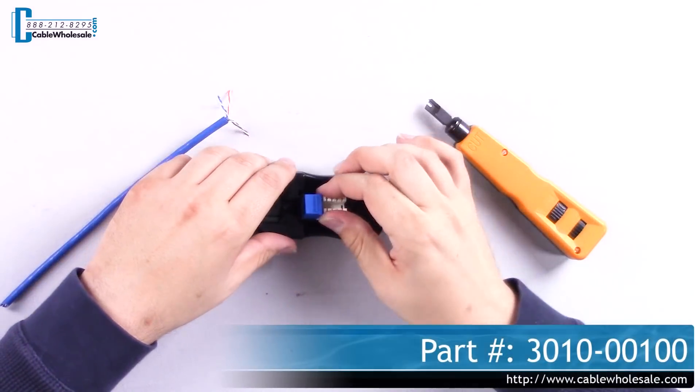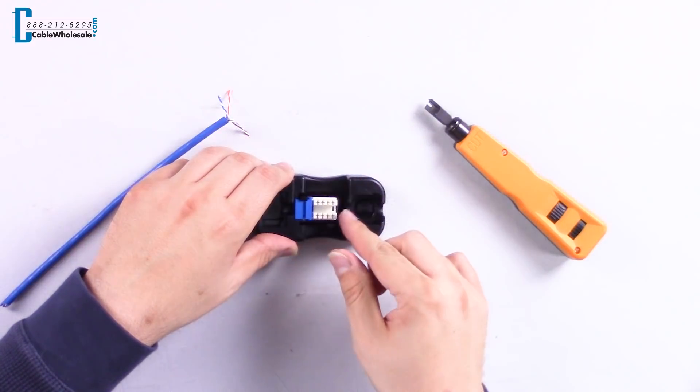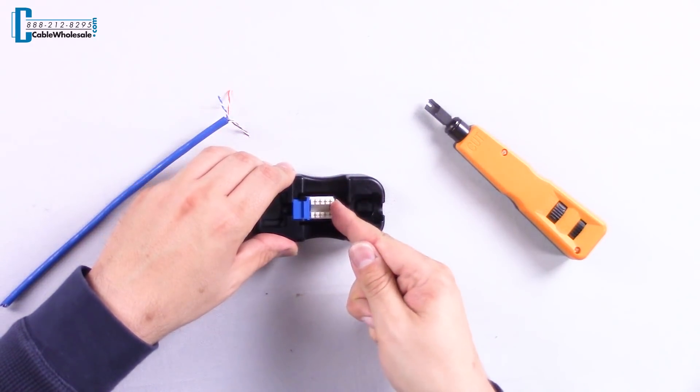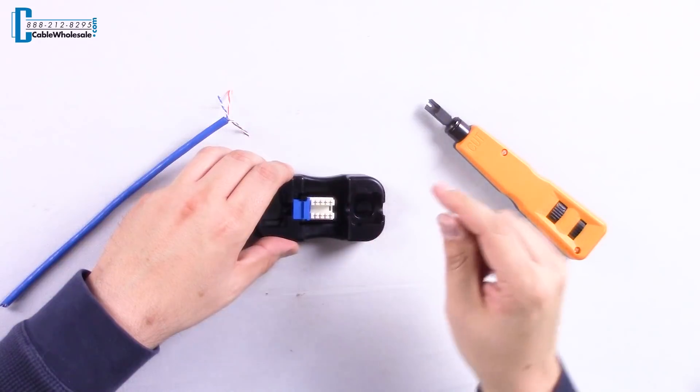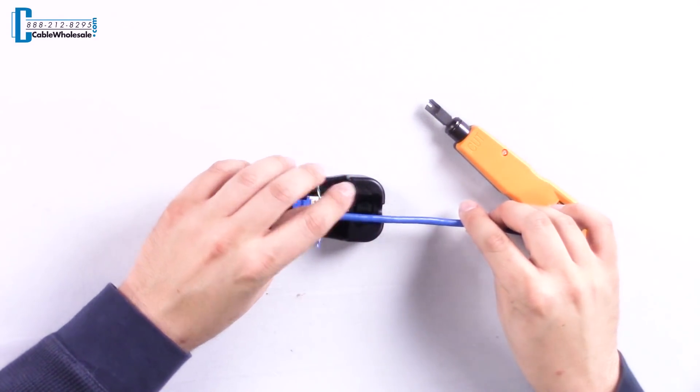All you do is snap in the keystone like so, you'll hear a clicking sound. Then push the keystone forward making sure it's seated properly. Once your keystone is securely in, your cable is going to lie in this channel here.